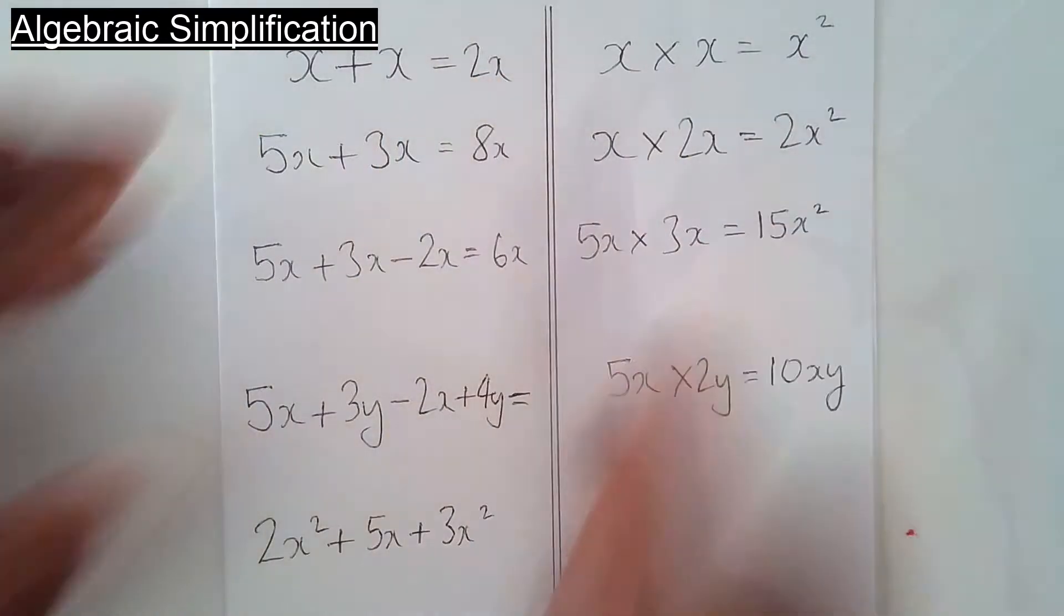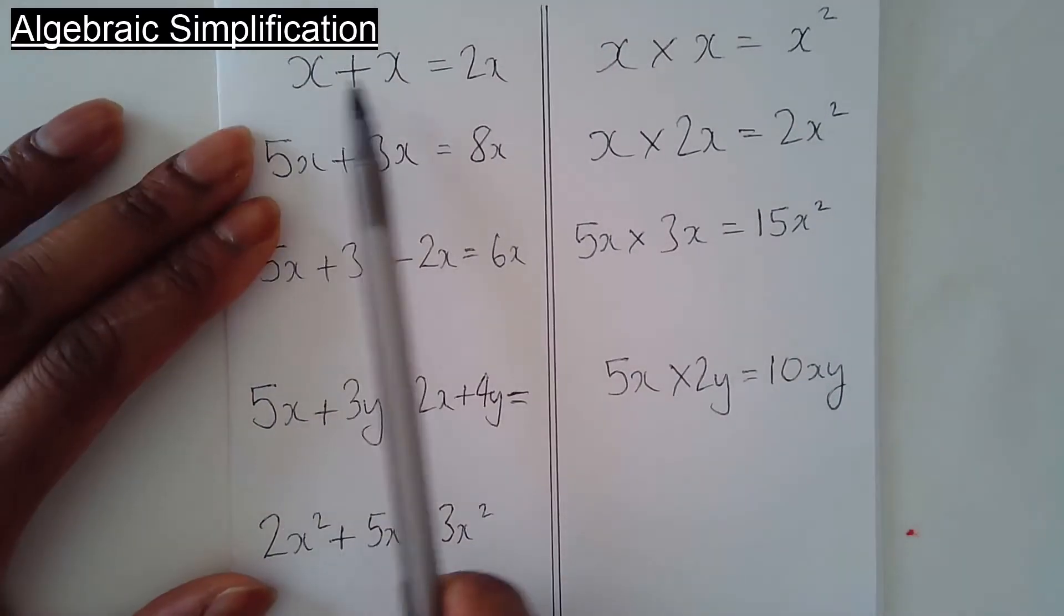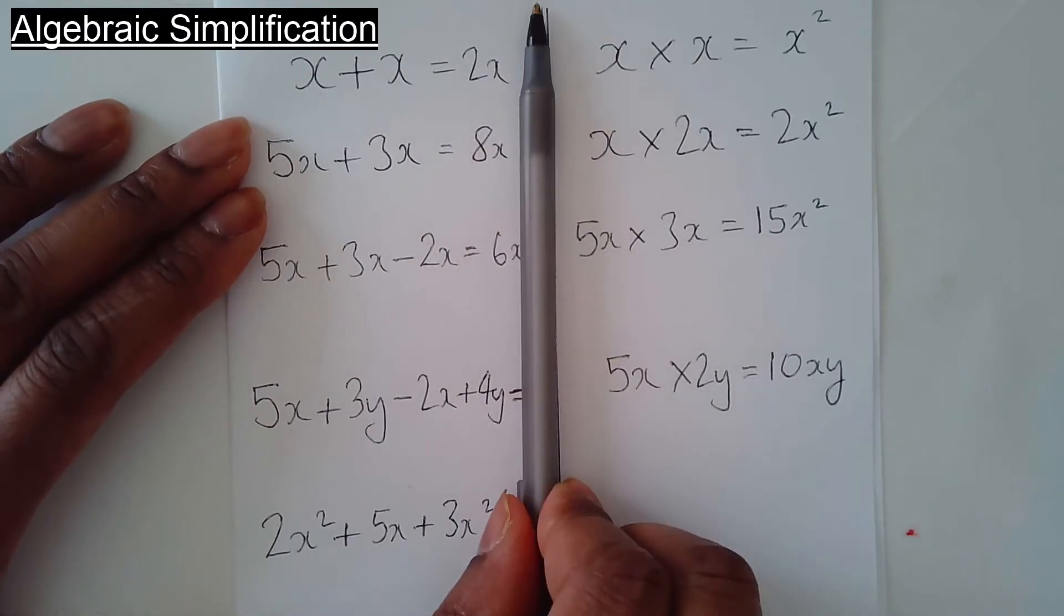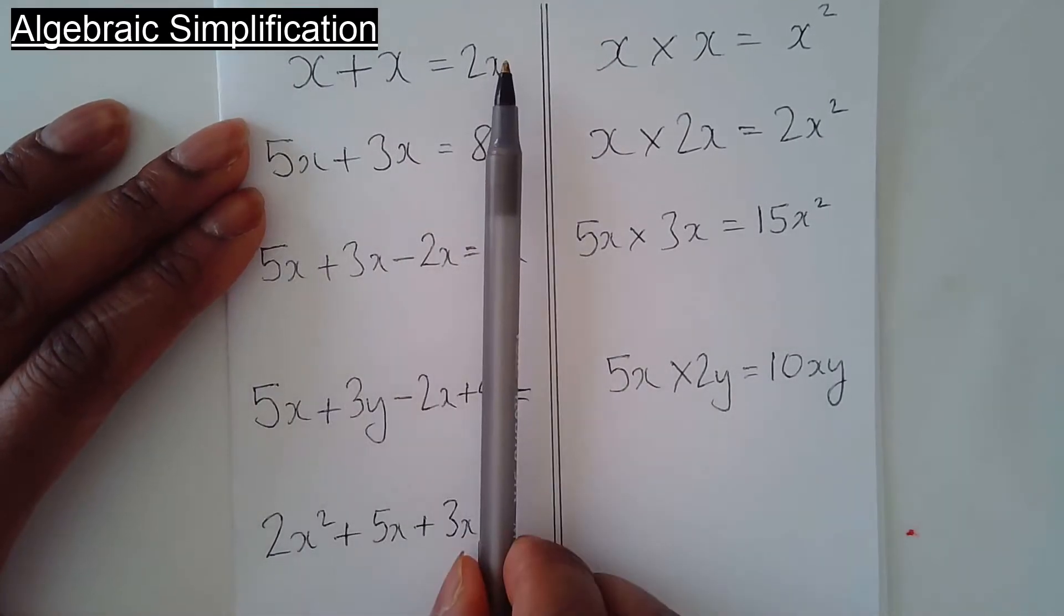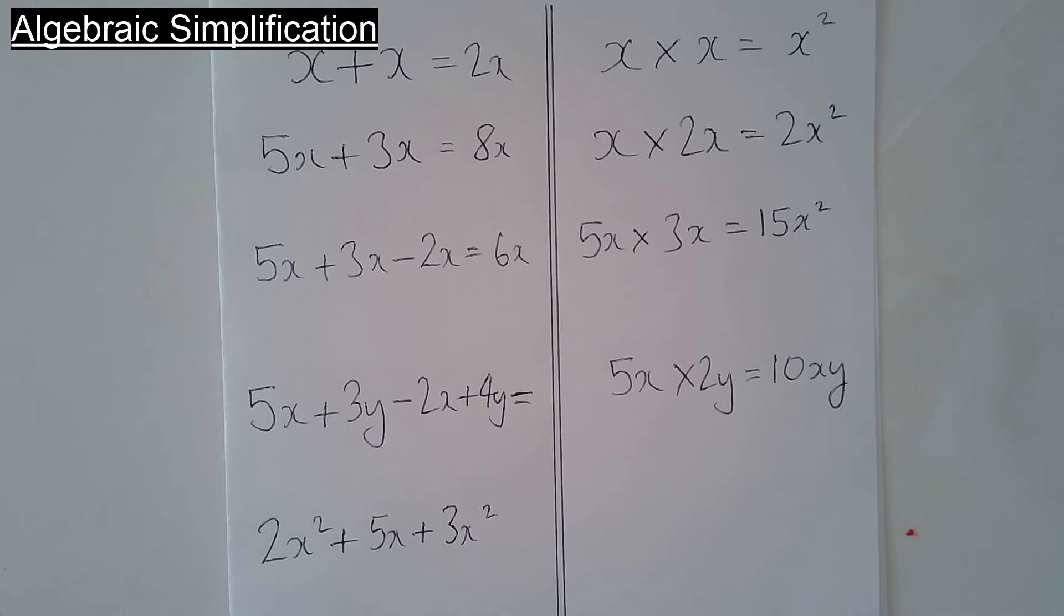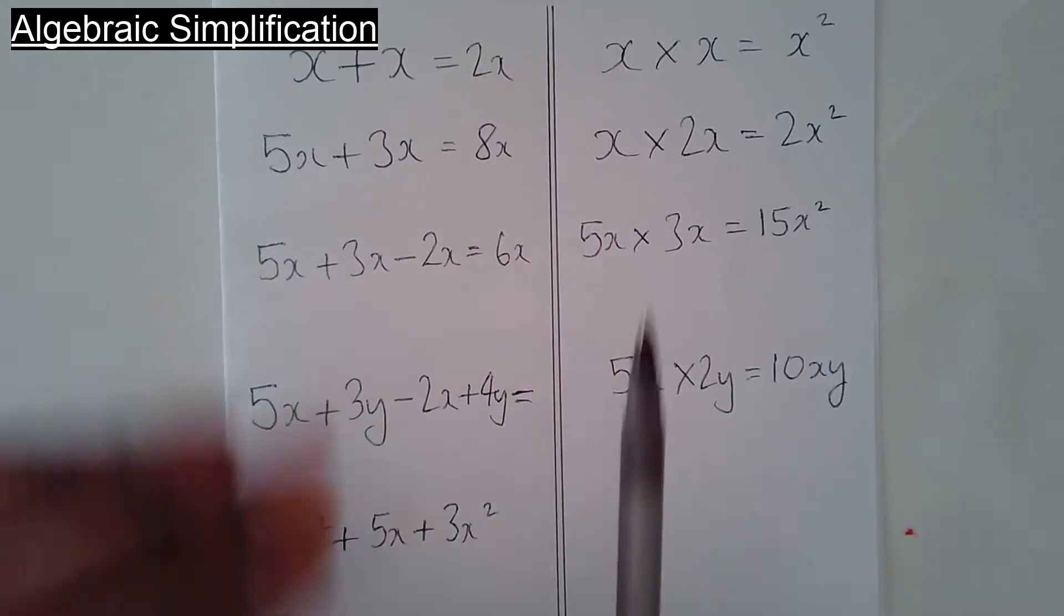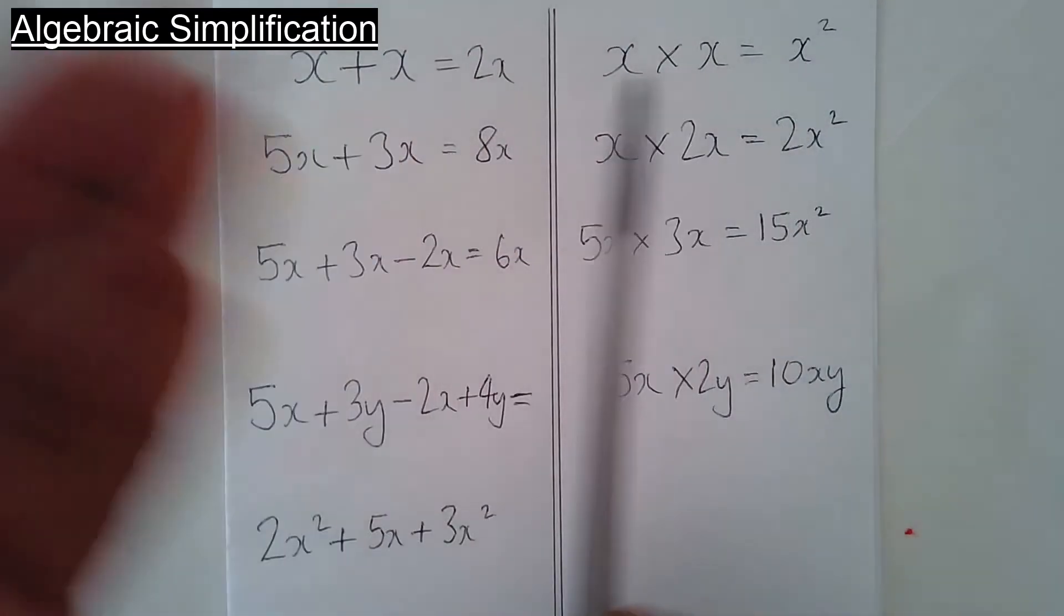Okay, looking at algebraic simplification. On this side we've got adding and taking away, and on this side I'm timesing. This could easily apply to dividing as well, but I'm trying to keep it as simple as possible.